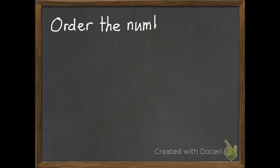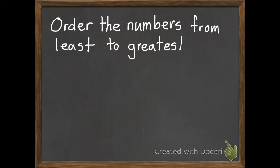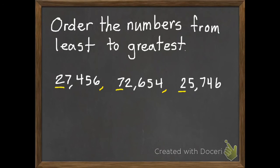Here's one more. I need to order the numbers from least to greatest. And here's my numbers. 27,456. 72,654. And 25,746. So I could put these in a place value chart. This time I'm just going to look at the first digit. I notice that they all go to the 10,000th place. So I can compare those. So we have a 2, 7, and 2. 7's the greatest. And this time we're ordering them from least to greatest. So greatest is going to be at the end. So I'm going to write 72,654.